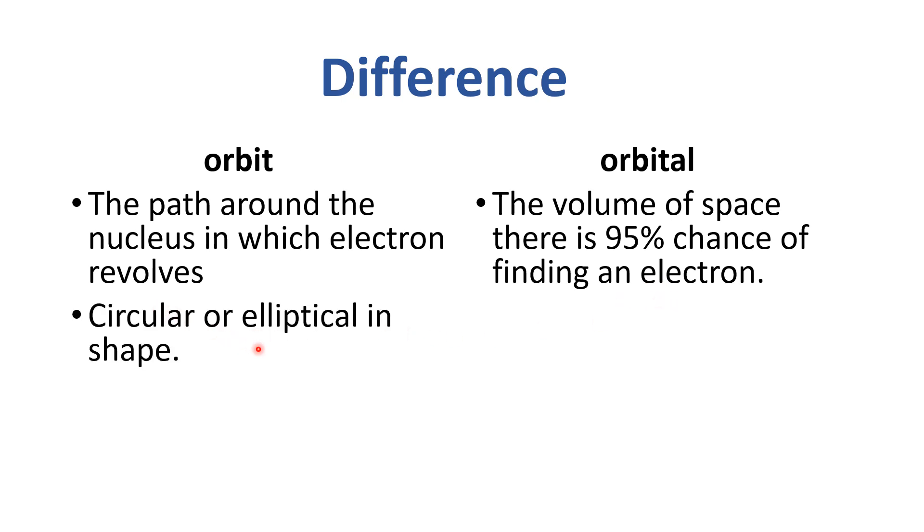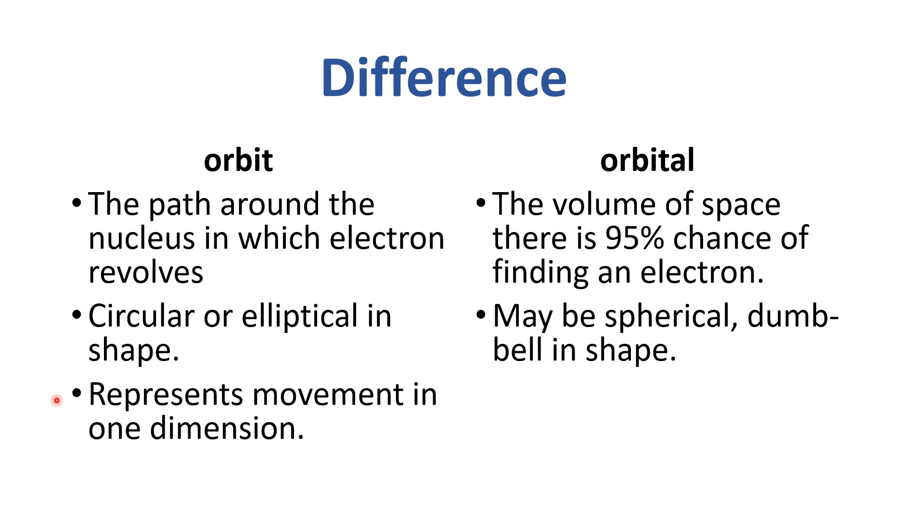Orbit jo hai, woh circular aur elliptical hote hai shape mein, while orbitals spherical, dumbbell, in shape. Orbit represents movement in one dimension, while orbital represents movement in three dimensions.